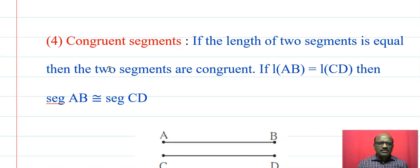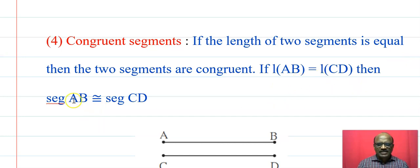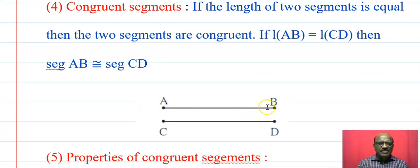Next, congruent segments. If two segments have equal length, then the given segments are congruent. If the length of two segments are equal — that is, if length AB equals length CD — then segment AB is congruent to segment CD. In the figure, length AB and length CD are the same, therefore segment AB is congruent to segment CD.